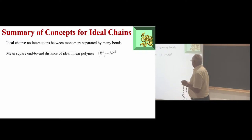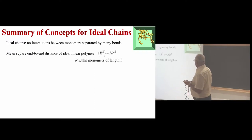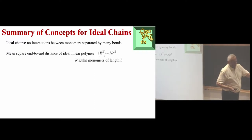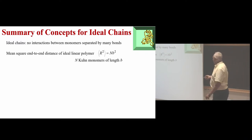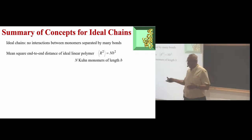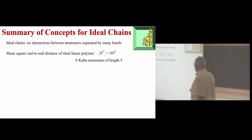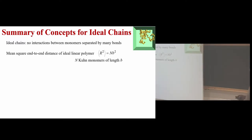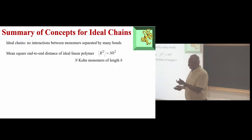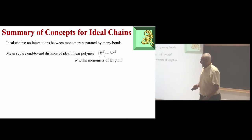One of the main results is that the mean square distance between the ends is proportional to the number of monomers, or number of effective monomers — Kuhn segments. We are trying to use similar notation, so our Kuhn length is B. The typical value is about one nanometer.